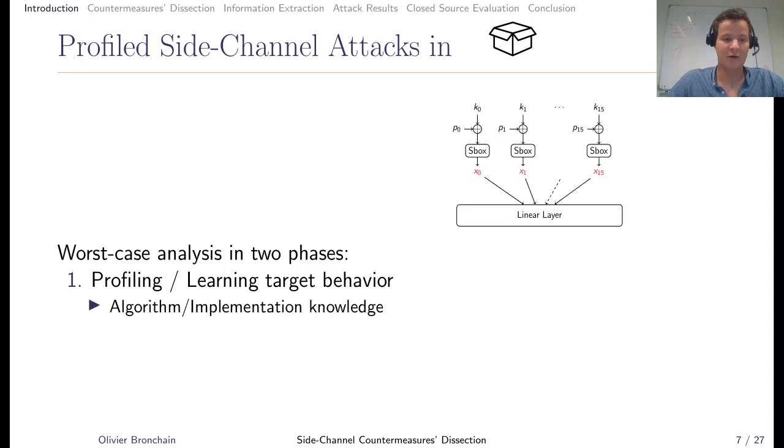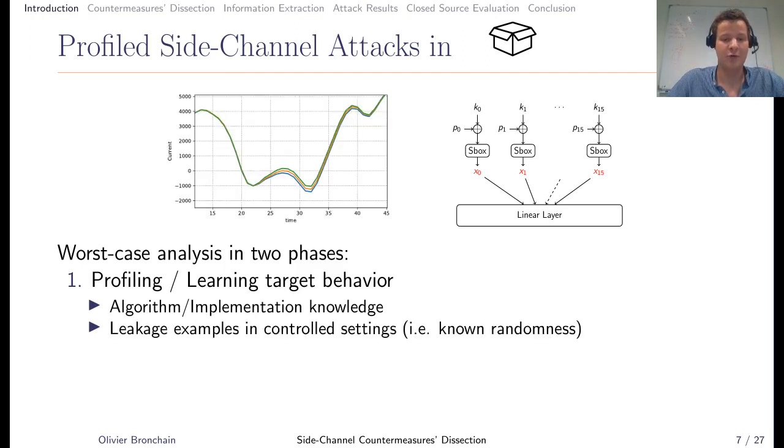The adversary or evaluator gets the source code, randomness, knows what algorithm is facing, and knows what countermeasures are implemented. Then he will collect measurements in a control setting where he knows the randomness. Because of that, he will be able to say that measurement corresponds to that intermediate value, that measurement to that value, and that measurement to that other value.